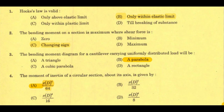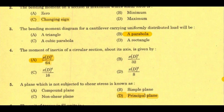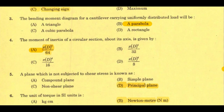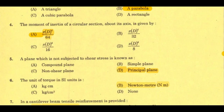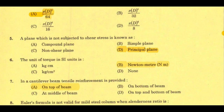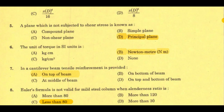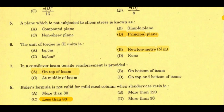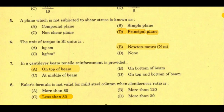Next question: a plane which is not subjected to shear stress is known as — option D, principal plane. On the principal plane, the shear stress is zero; there is no shear stress and only normal stress acts. The normal stresses acting on the principal plane are called principal stresses.